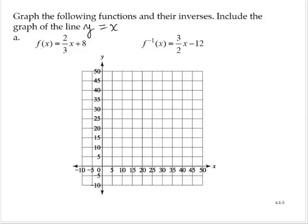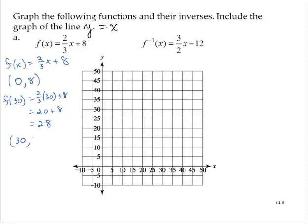So f of x is equal to 2/3 x plus 8. Let's work in blue for that function. I know it has a y-intercept of 8. And I'm going to choose another value, let's say 30. f of 30 would be 2/3 of 30 plus 8. And so that would be 20 plus 8, which is 28. So I have another point, 30, 28.